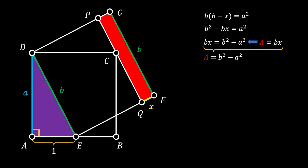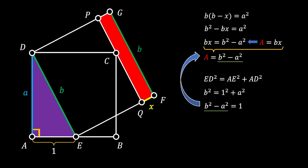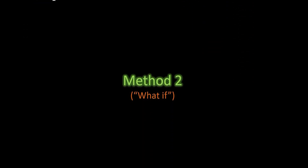Now, looking at the purple right triangle, we apply the Pythagorean theorem: the hypotenuse ED squared equals leg AE squared plus leg AD squared. Substituting values, b squared equals 1 squared plus a squared. Rearranging, b squared minus a squared equals 1. Since the area of the rectangle equals b squared minus a squared, the area of our red rectangle equals 1 square unit. This is our solution.